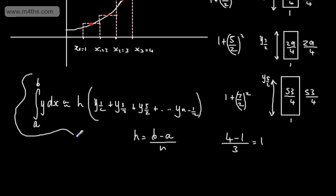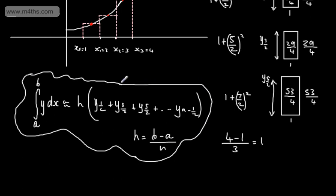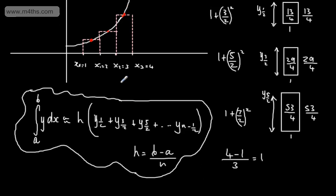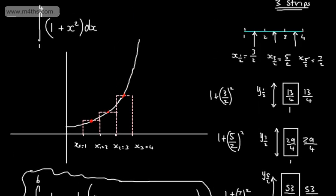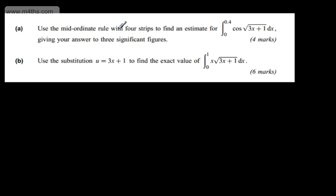The mid-ordinate rule is slightly more intuitive than the trapezium rule and certainly easier to implement. So let's look at applying this to a given function. A typical question: use the mid-ordinate rule with 4 strips to find an estimate for the integral from 0 to 0.4 of cos(√(3x + 1)) dx, giving the answer to 3 significant figures.